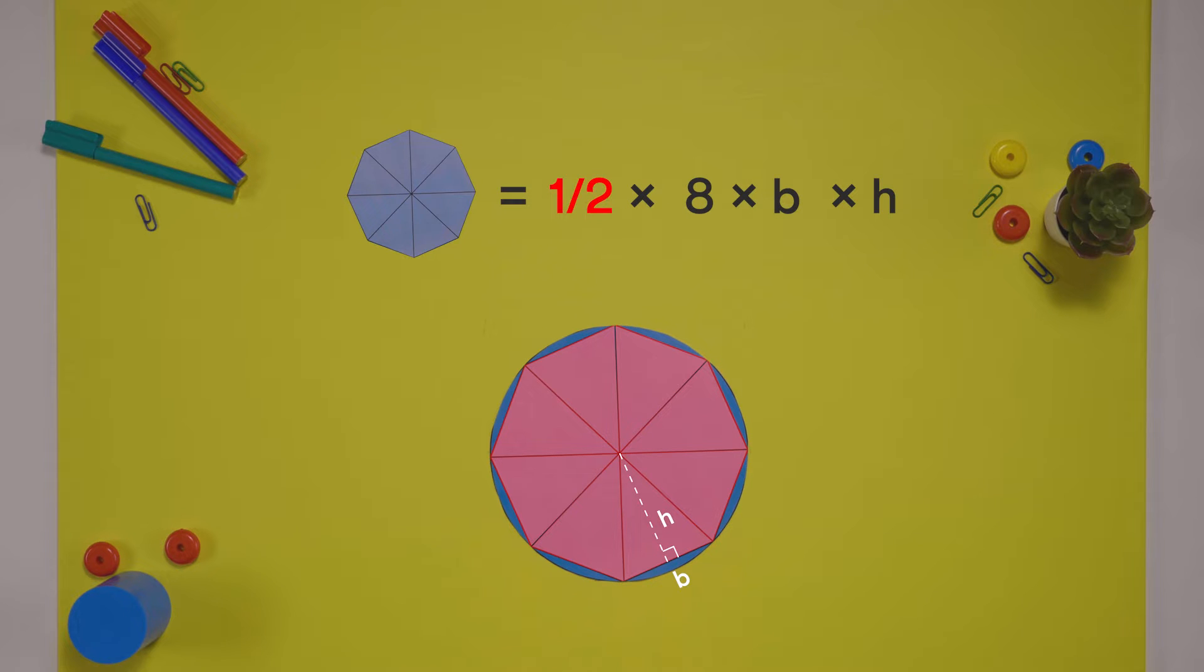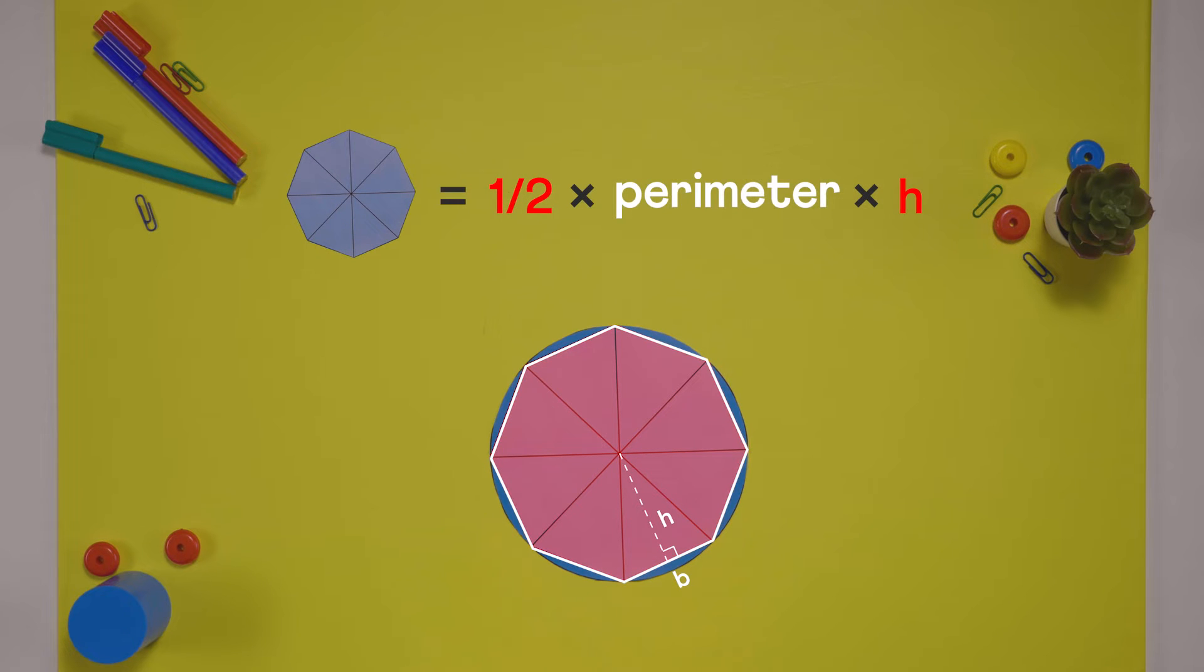We can rearrange this as half times eight times base times height. This term is the sum of the bases of all eight triangles, which is the perimeter of this shape.